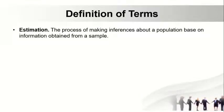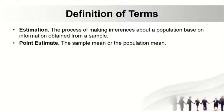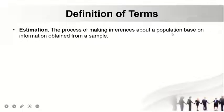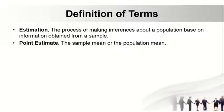First, we have definitions related to our lesson. Estimation is the process of making inferences about the population based on information from a sample. Point estimate: the sample mean or a population mean. So when we solve, this will be your point estimate if we're talking about the population mean or the sample mean.